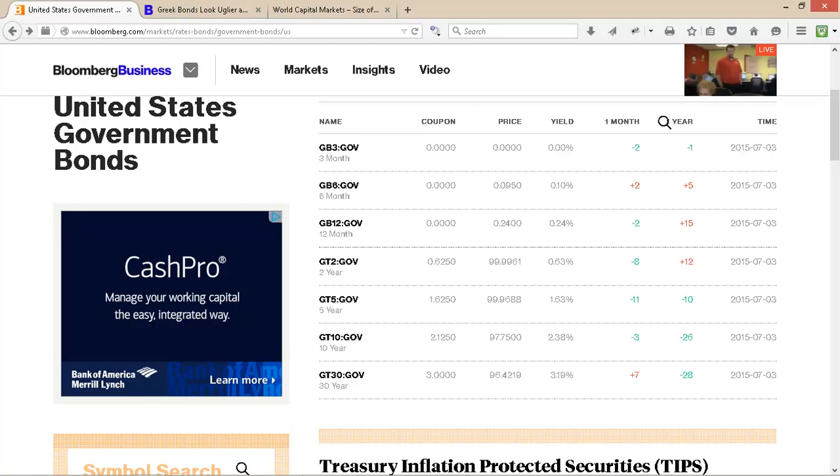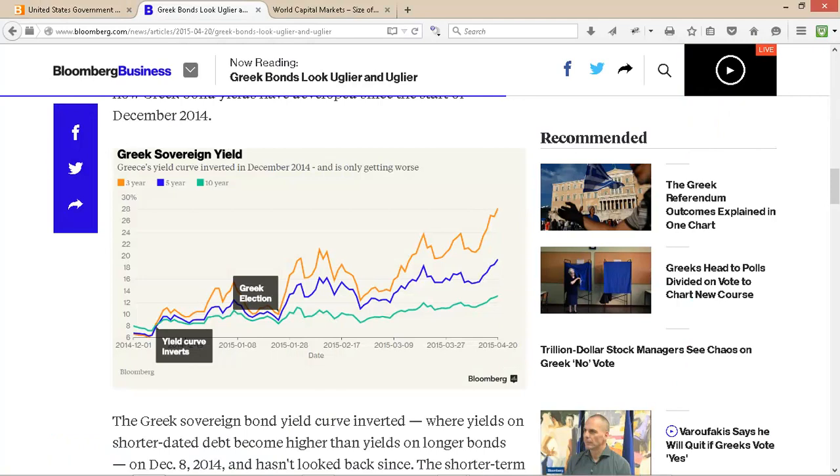You also get inverted yield curves. Looking at Greece after their referendum, there's a lot of uncertainty about whether they'll pay off the money they've borrowed. Around the end of 2014, Greece's yield curve inverted. The three-year was the lowest rate, then five, then ten—a normal setup. But it flipped and has remained inverted since.